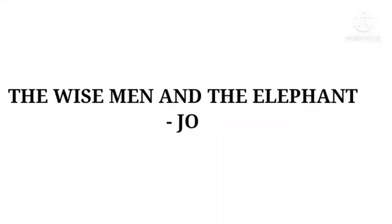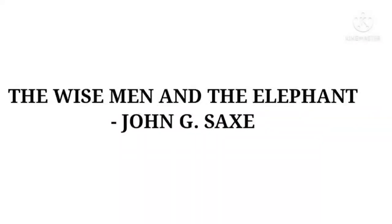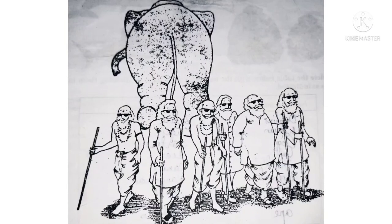The Wise Man and the Elephant is written by John G. Sachs. It is a poem about six men of Hindustan, i.e. India, who wanted to know about the elephant — what it looks like — simply by touching it.